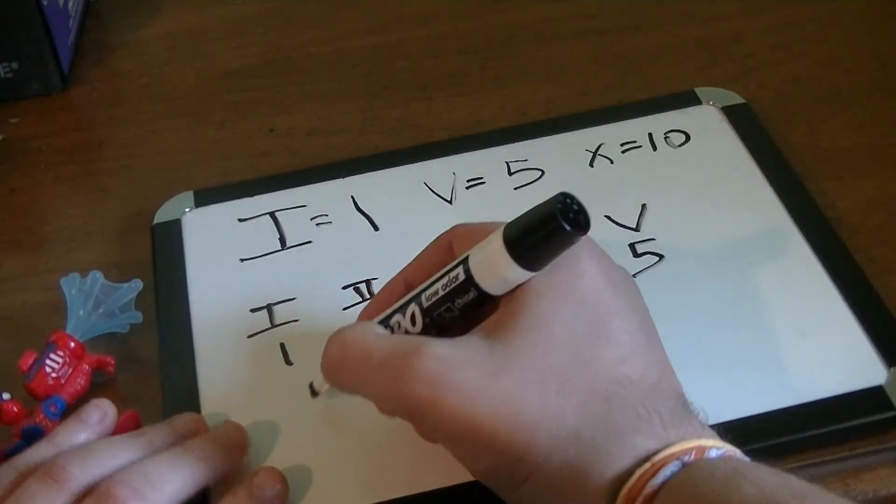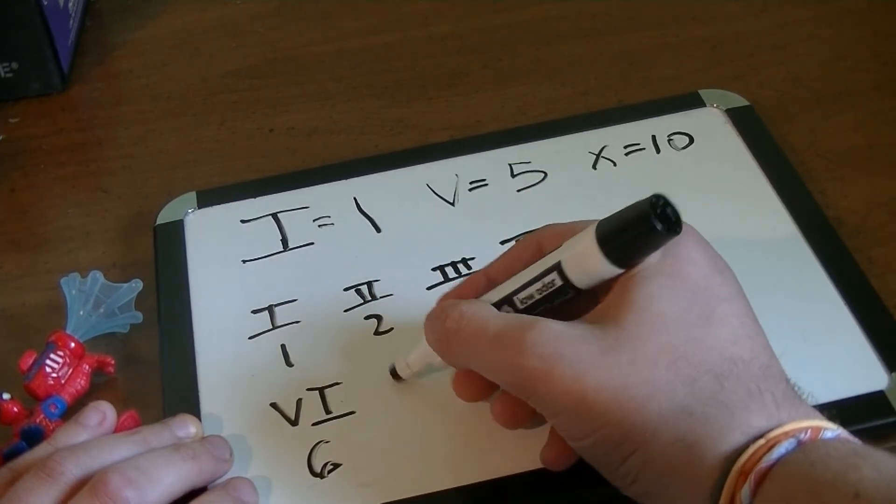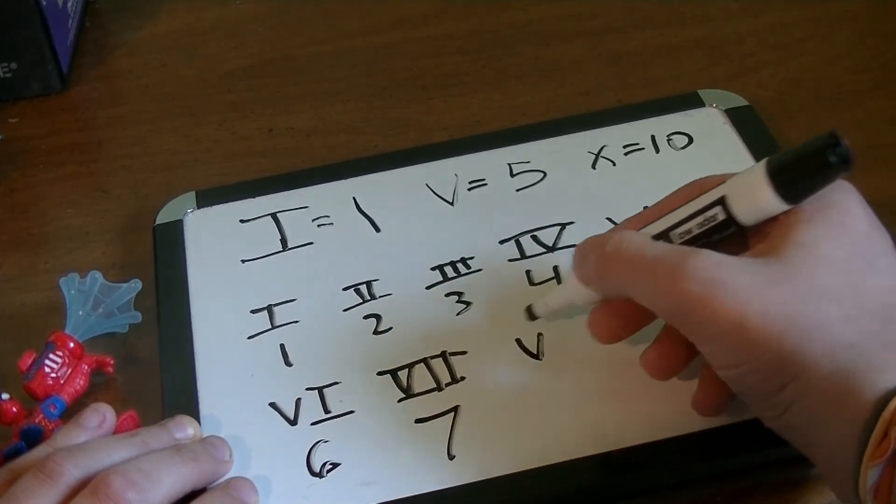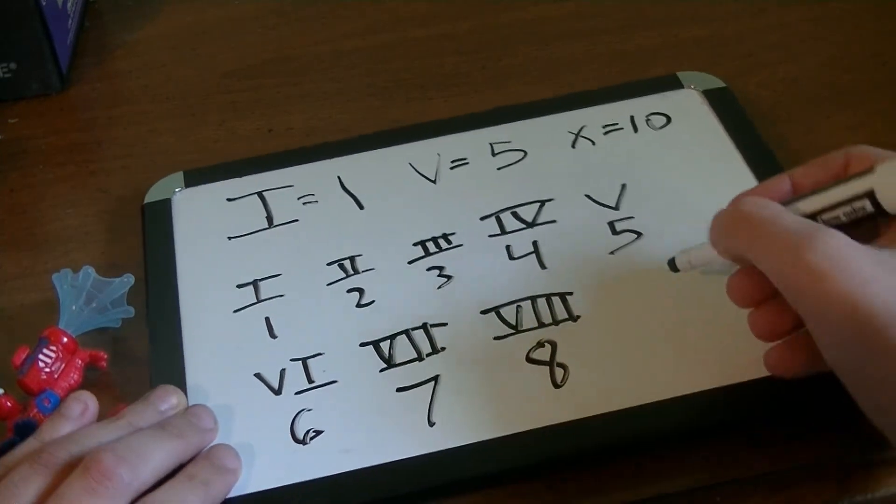And then 6 is VI, 7 is VII, 8 is VIII. And here's where 9 changes up a little bit.